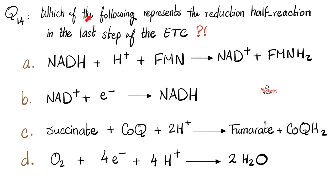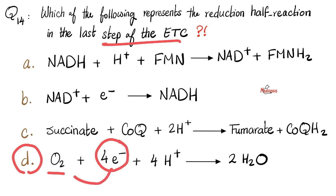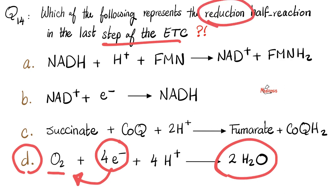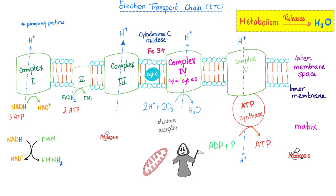Next, question 14: which of the following represents the reduction half-reaction in the last step of the electron transport chain? What's the last step in the electron transport chain? Oxygen is the final electron acceptor. When you accept electrons, you are being reduced — that's the reduction half-reaction. And when you reduce oxygen, you reduce it into water. At complex 4, you have 2H⁺ + ½O₂ giving H₂O — oxygen is being reduced to water.